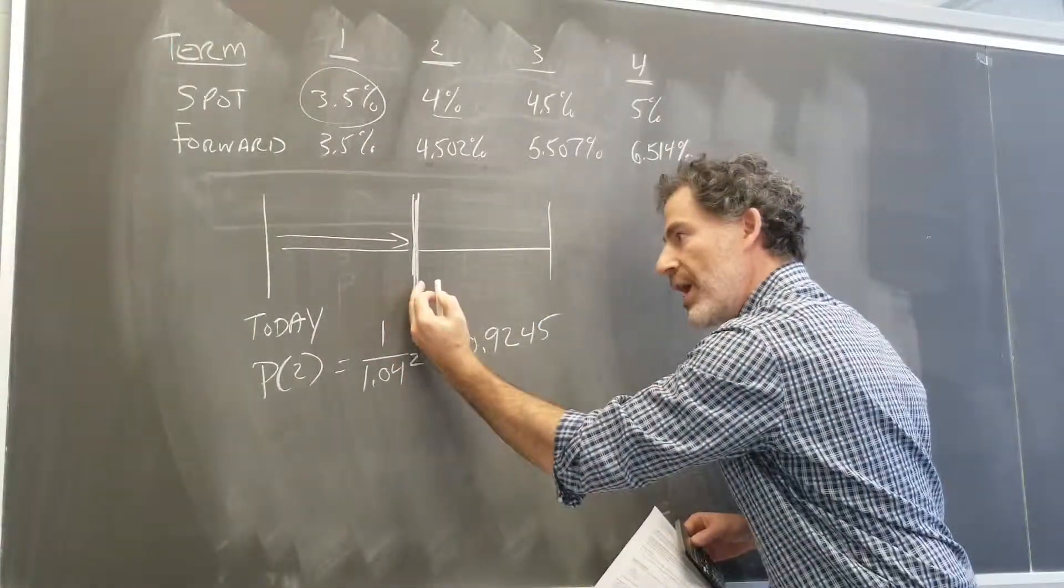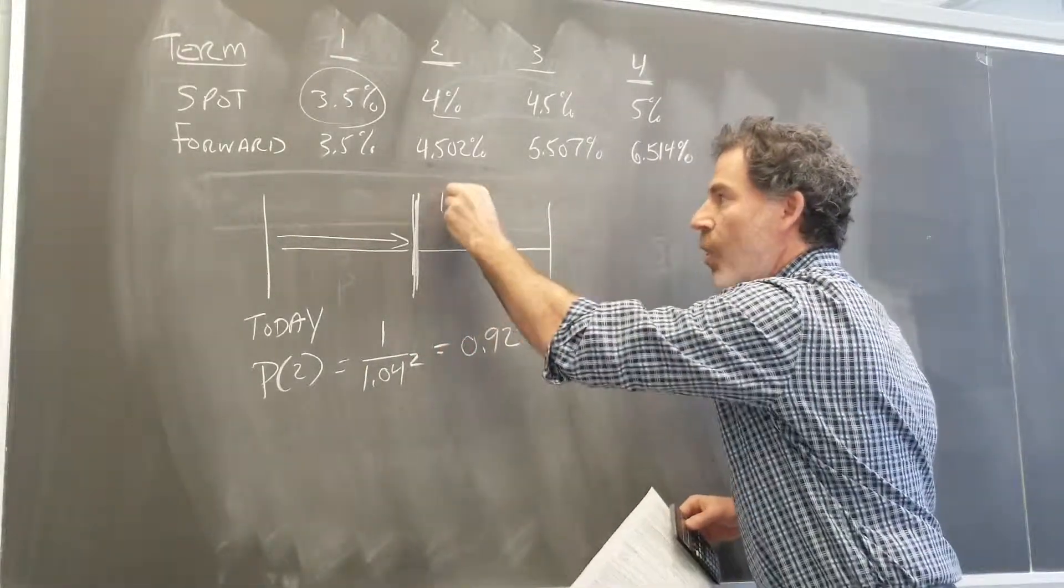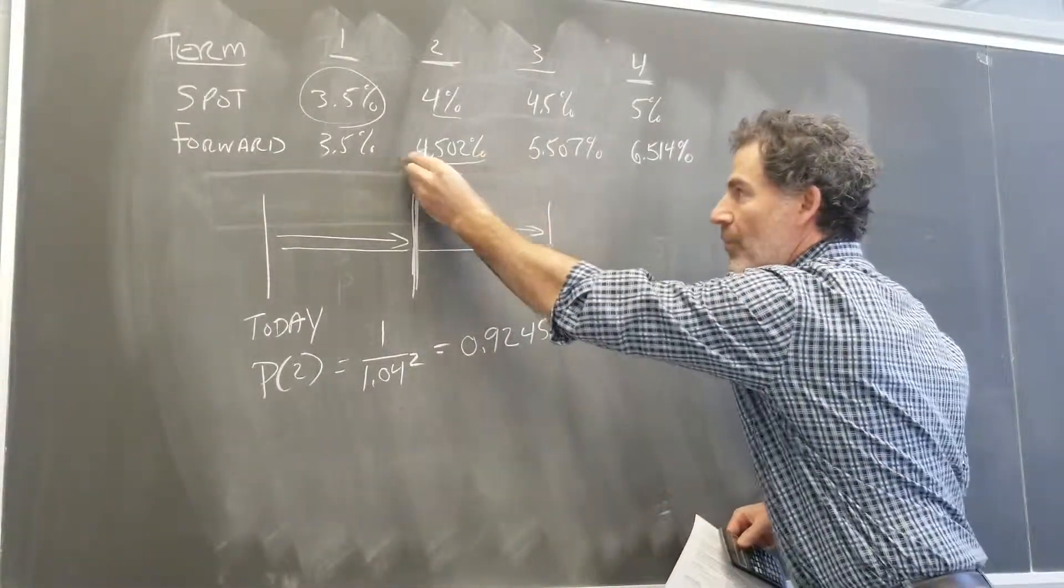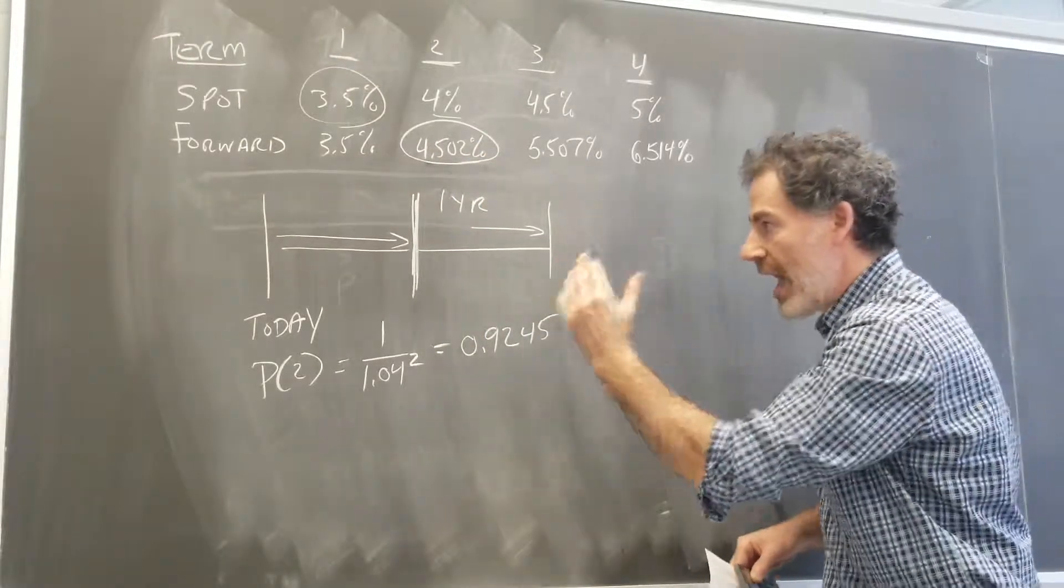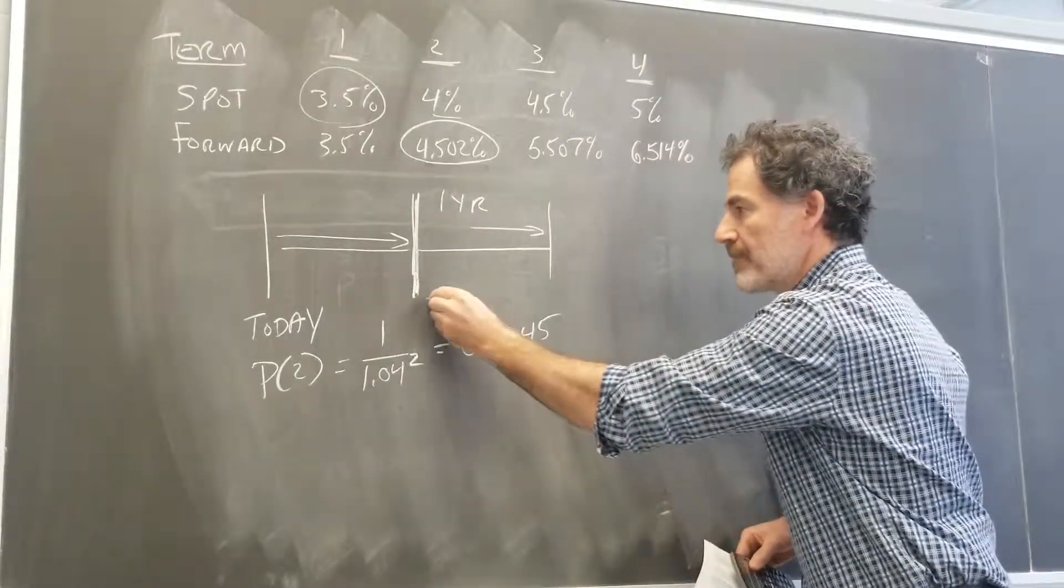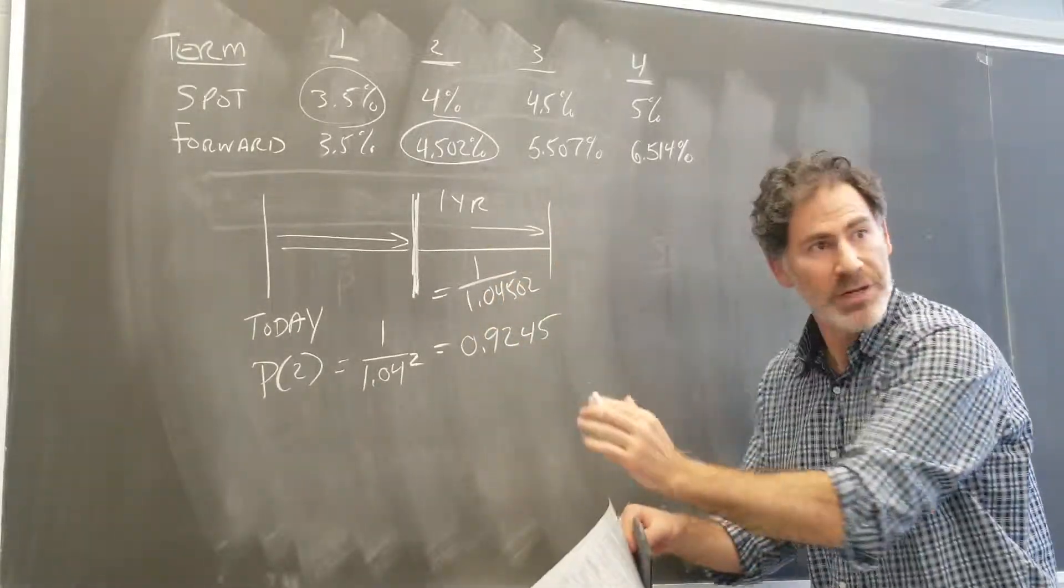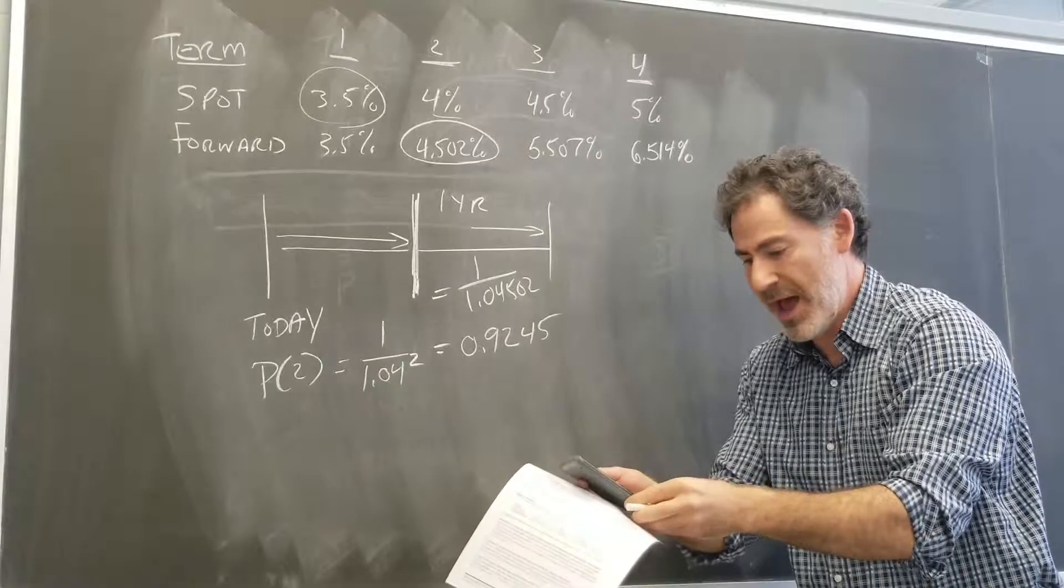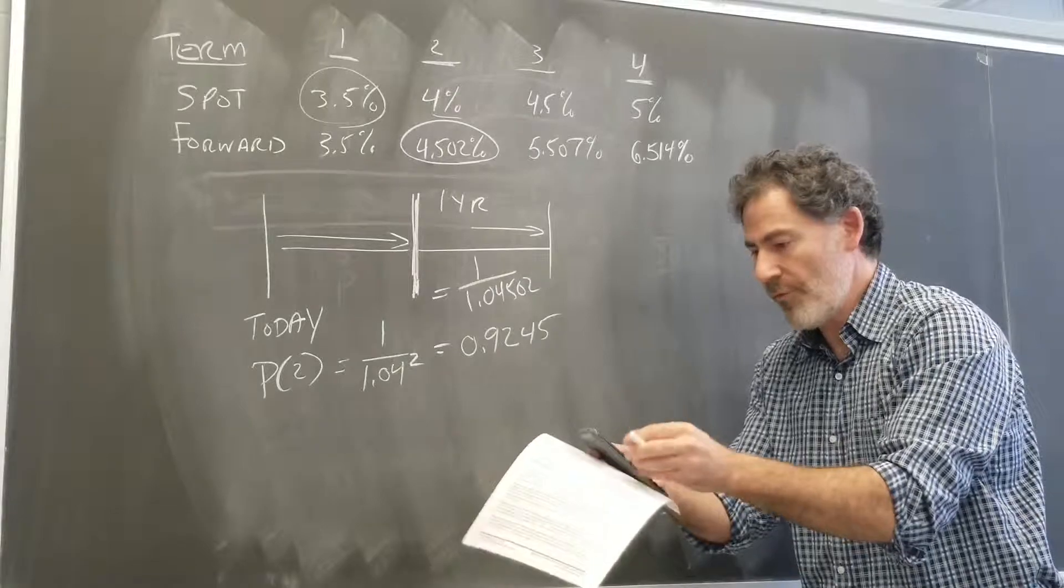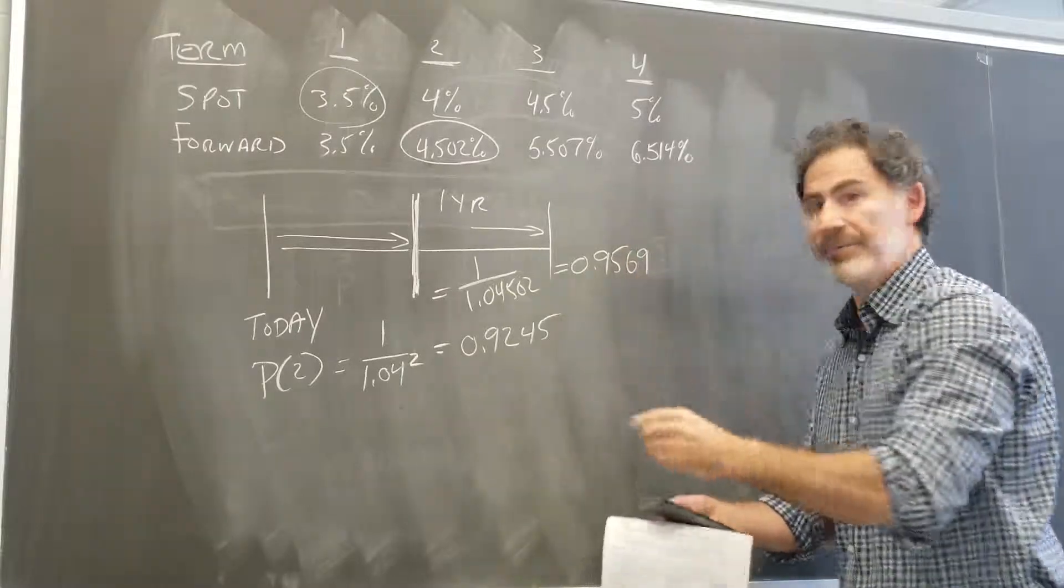So if we move forward and the spot rates evolve, my two-year bond now has just one year left to maturity. So how would I price that? Well, here I can come right here and grab this forward rate. So now, let's see. At this point in time, the bond should be worth 1 over 1.04502. Okay, there's no need to square it. It's only for one period. So let's do this math. 1.04502, one over. So this is 0.9569.